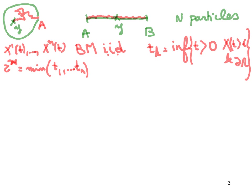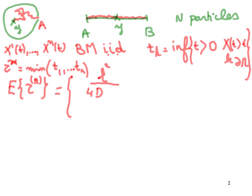What we will be interested in is to calculate the mean of this time τₙ, and how this mean time depends on n. What we are going to show is that this calculation can be done explicitly. In dimension one, I'm going to give you the result and then prove it. It is L² divided by 4D, where D is the diffusion coefficient, multiplied by log of n divided by square root of π.